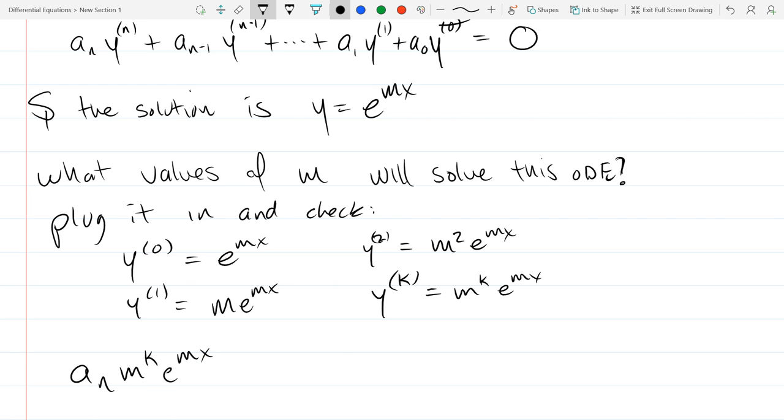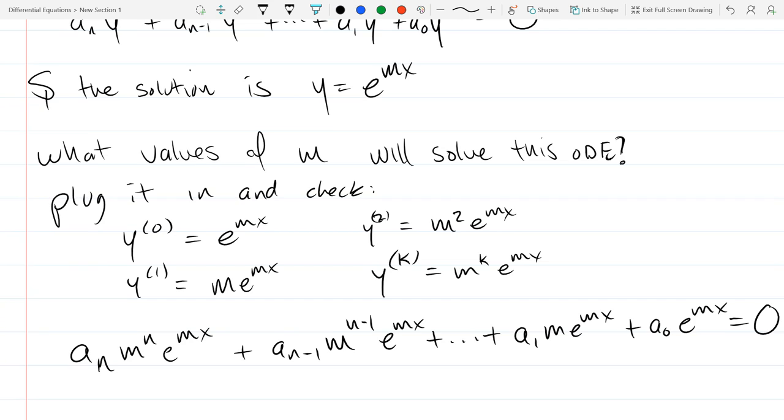So we'll do Y prime first. I'm going to write my derivatives in parenthesis notation so it matches what we're going to fill back in. So I'll start out with Y0 is E to the MX. Y1, ME to the MX, and Y2. Do I need to keep going for the pattern to be obvious? So we can just write down YK for any K value is M to the K, E to the MX. So it's not too difficult to plug this in.